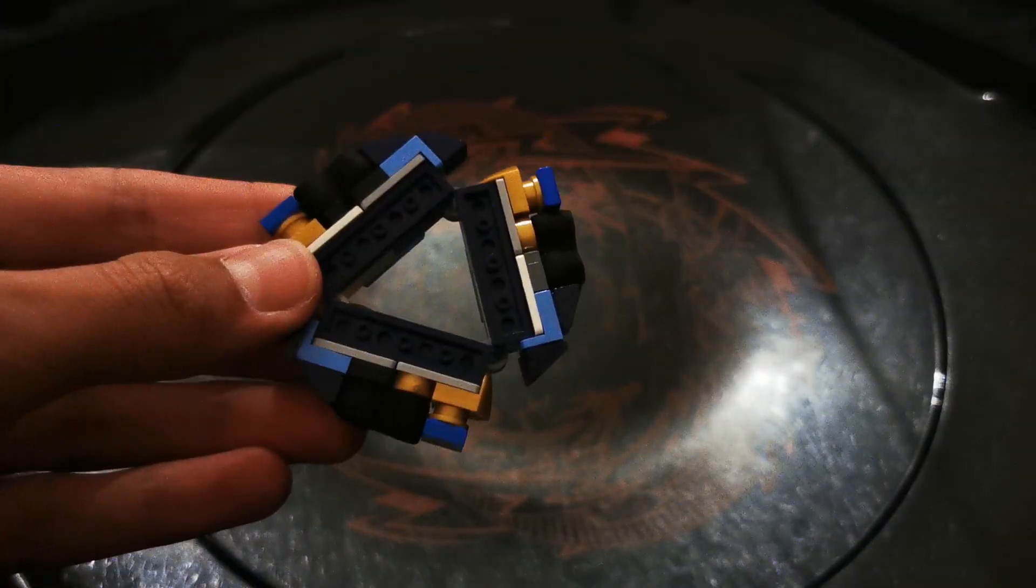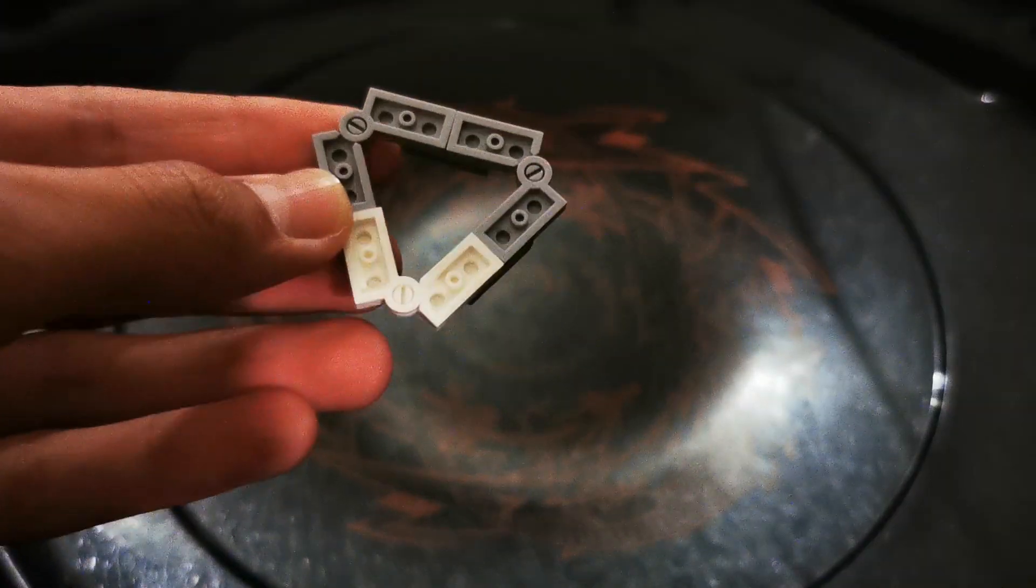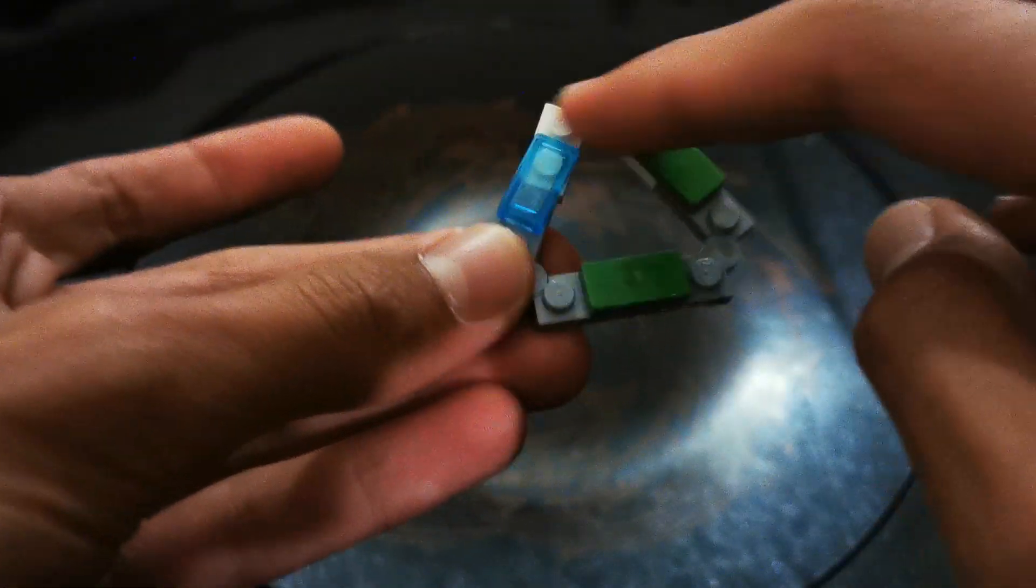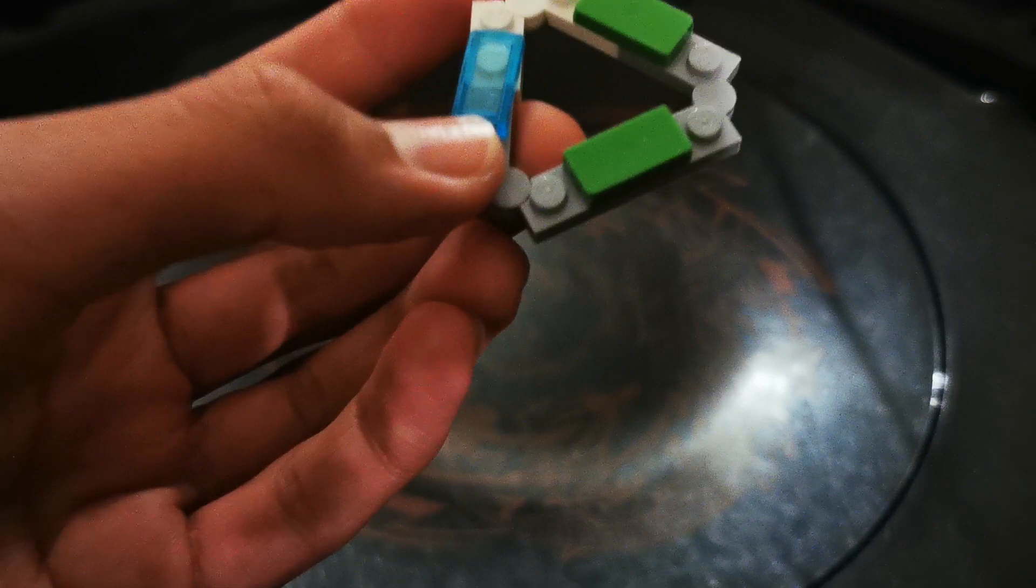Now let's make the layer. First build this frame which is made up of these 3 hinges and these 3 1x2 tiles.